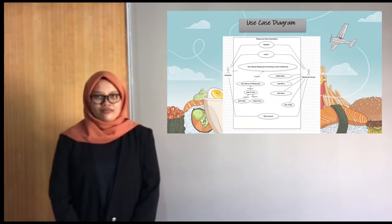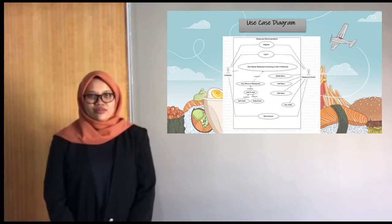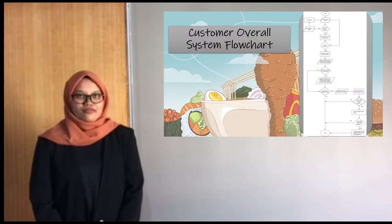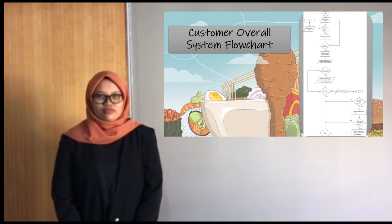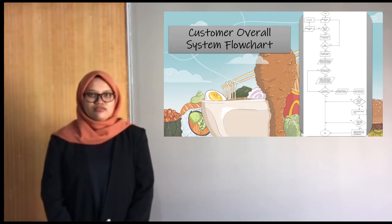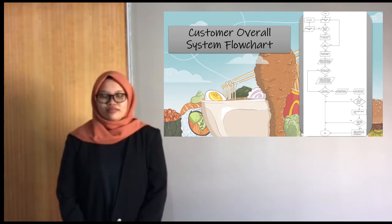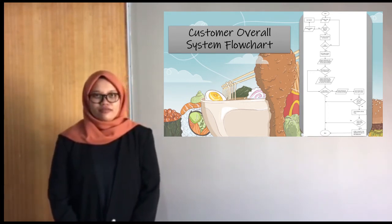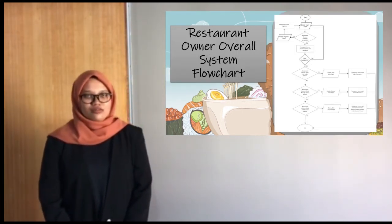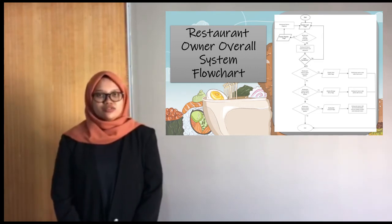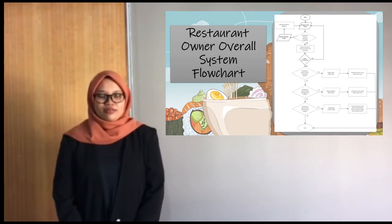Here we have the use case diagram. As you can see, there are two roles: the customer and the restaurant owner. We also have the customer overall system flow chart, which shows the flows of the system based on the customer perspective. We also have the restaurant owner overall system flow chart, which shows the flows for the system based on the restaurant owner perspective.